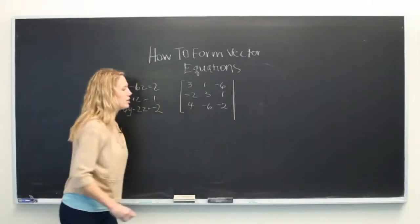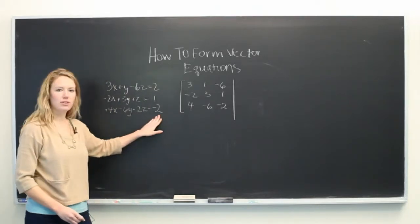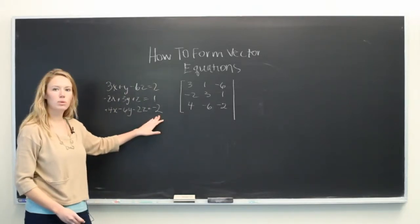We draw a line here because we also need to include the values on the other side of the equal sign: 2, 1, and minus 2.